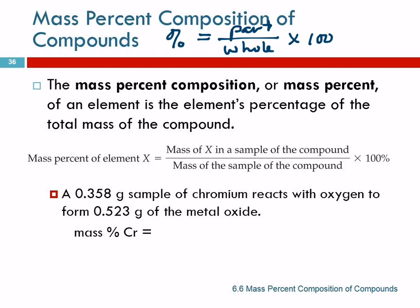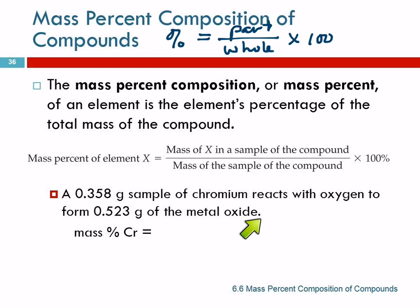Let's look at this example. A 0.358 gram sample of chromium reacts with oxygen to form 0.523 grams of the metal oxide. This is the compound — it's got chromium and oxygen in it together; it's the whole thing. This is the mass of the chromium that went into the compound.